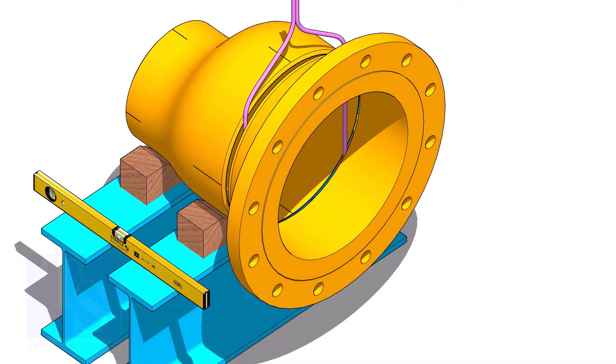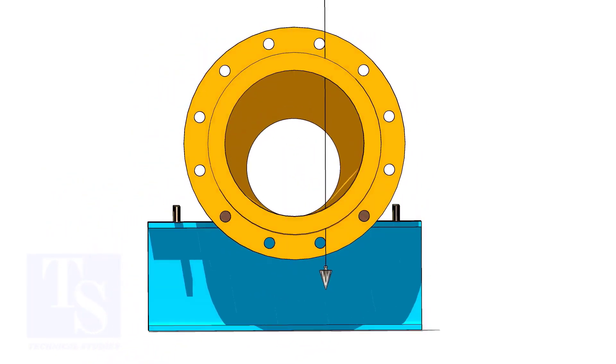Put flange in the gap rod. Arrange proper supports below the flange. Plumb the flange through the holes as shown.